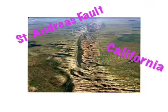A geographic location of a transform boundary is the San Andreas Fault, which is located in California.